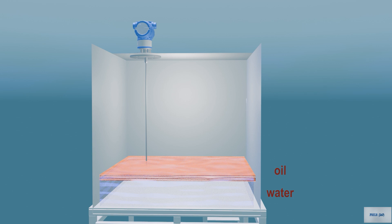When two media with different characteristics are present, microwaves reflect off both surfaces, allowing for level and interface measurement.